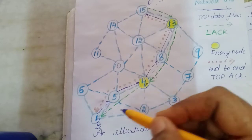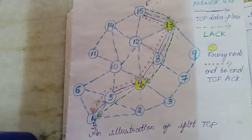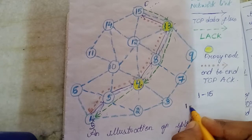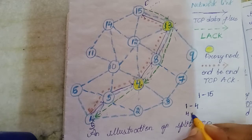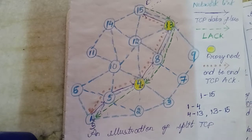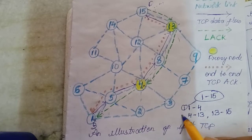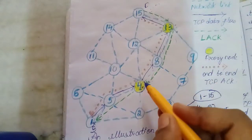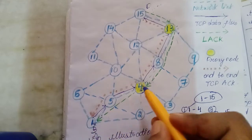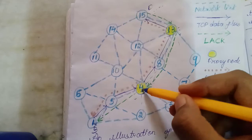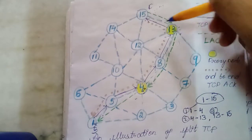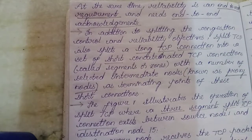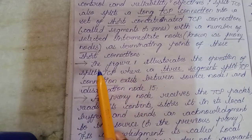The path is split as follows: from node 1 to node 4 is one shortest path, from node 4 to node 13 is another shortest path, and from node 13 to node 15 is the third. So this long path length is split into three short path lengths. The nodes which terminate these short path lengths are called proxy nodes. The yellow highlighted nodes are proxy nodes.